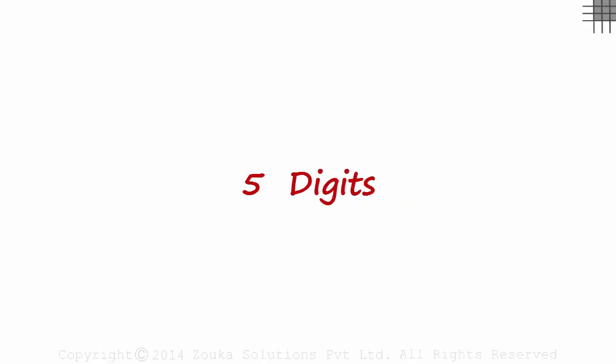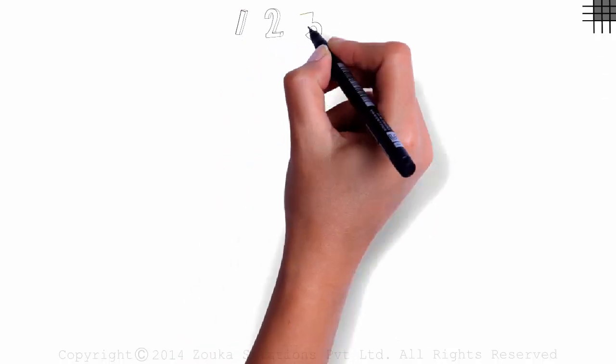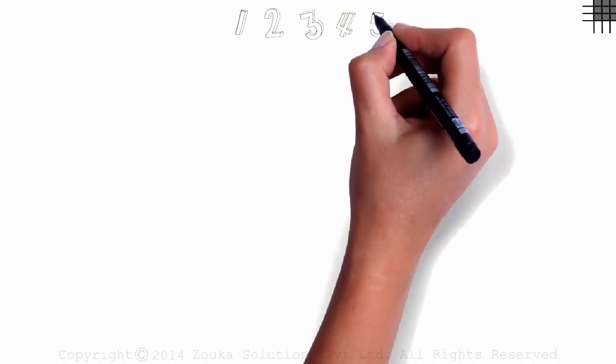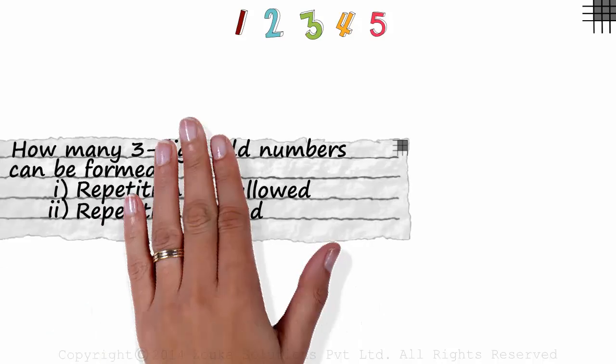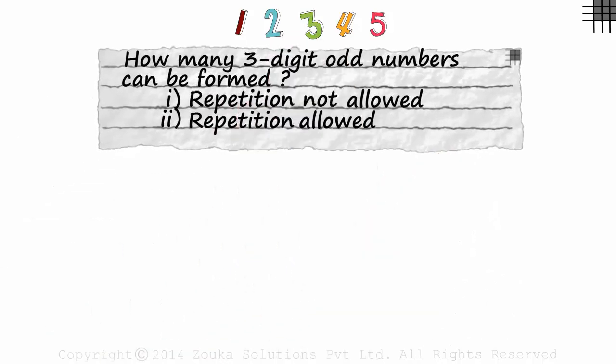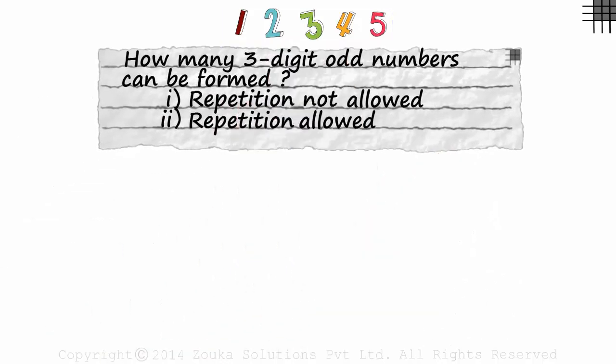We have been given five digits: 1, 2, 3, 4, and 5. Along with that, we have this question: using these five digits, how many three-digit odd numbers can we form?